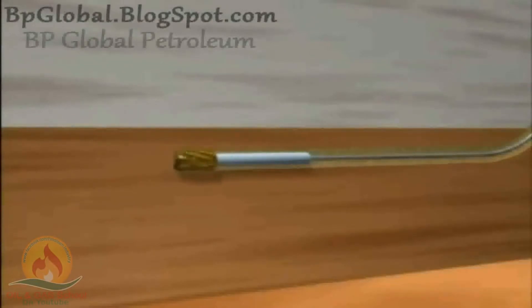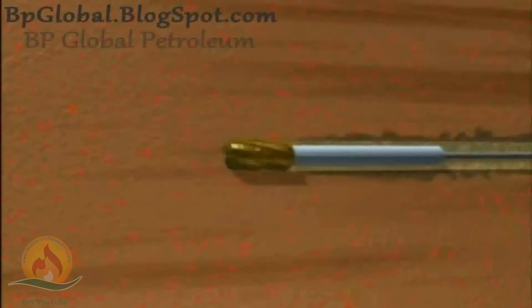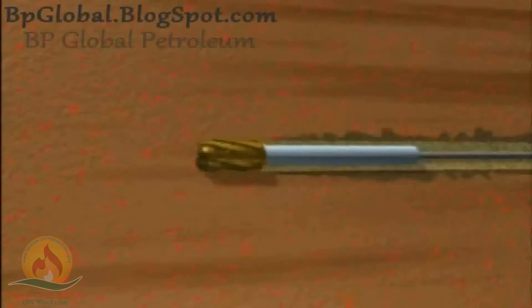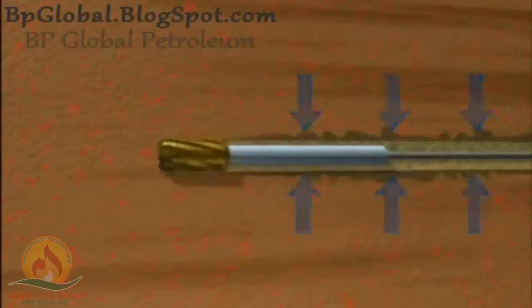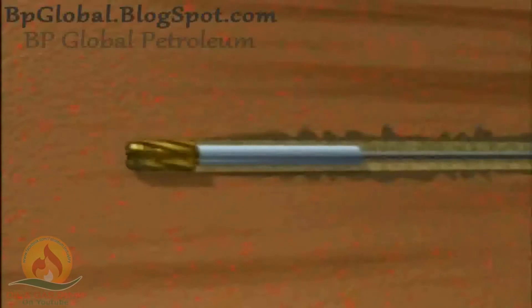The drilled cuttings are lifted to the surface by the circulating drilling fluid. In conventional over-balanced drilling operations, the hydrostatic pressure exerted by the drilling fluid in the well is designed to exceed the pressure of the hydrocarbon fluids in the reservoir. Since the pressure in the hole is higher than the pressure in the rock, fluid and fines are lost to the formation. These losses cause damage to the near wellbore area, resulting in reduced production.